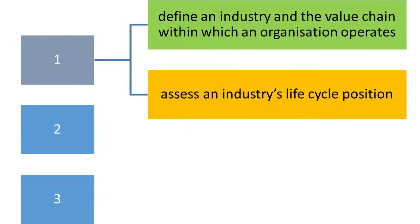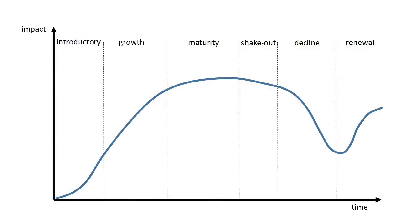We've defined the industry and specific segment and now identified the value chain in that industry. The last step is to look at the industry life cycle. In this summary, I'll cover a few key points to remember about this step.